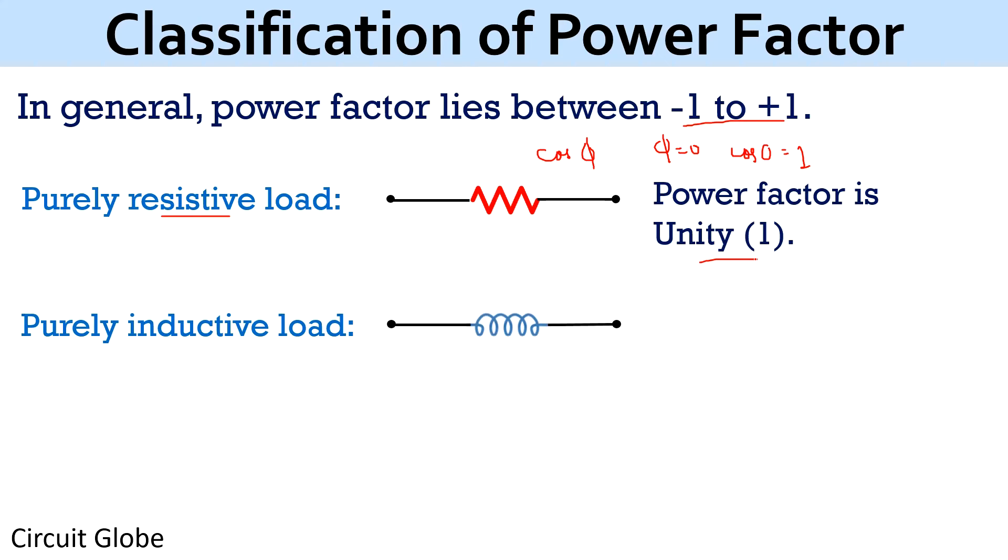Next coming to purely inductive load, which says that power factor exists between 0 and 1 for this particular case. What happens here is the voltage and current waveforms are not in same phase. The reason for this is that there is a property of inductor that it opposes sudden change of current. Thus, current lags the voltage in this case. For a purely inductive load, it is said that current lags the voltage by 90 degrees. Hence, cos φ for this particular case will be cos 90, whose value will be equals to zero. However, practically this zero value is not possible, as some resistance of the motor will be there. Due to this reason, it is said that the power factor for a purely inductive load lies between 0 and 1.